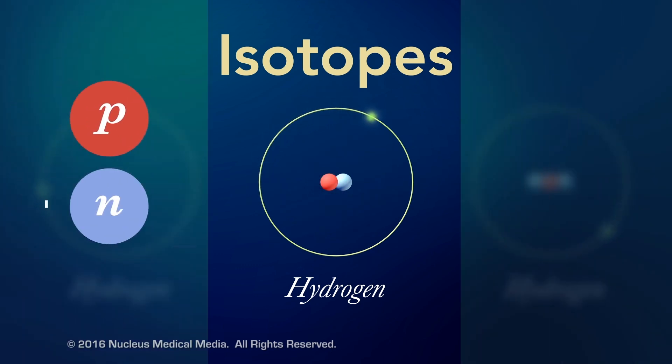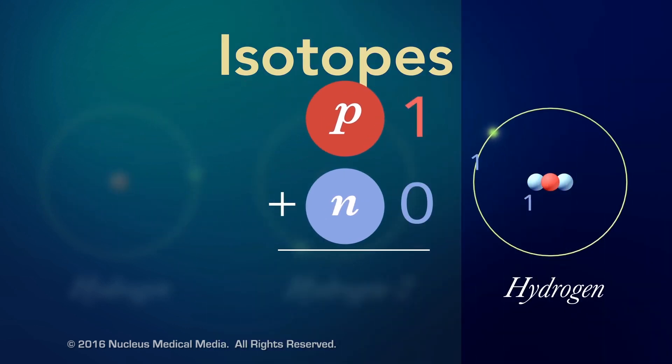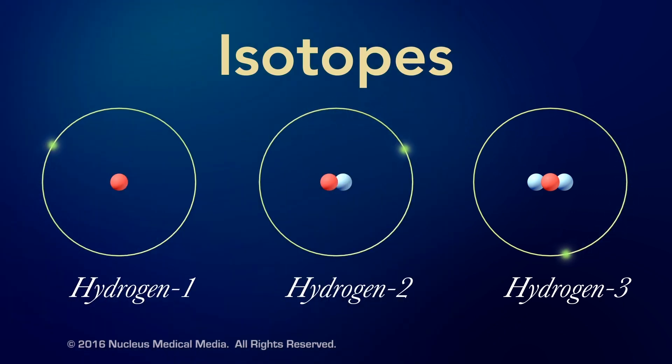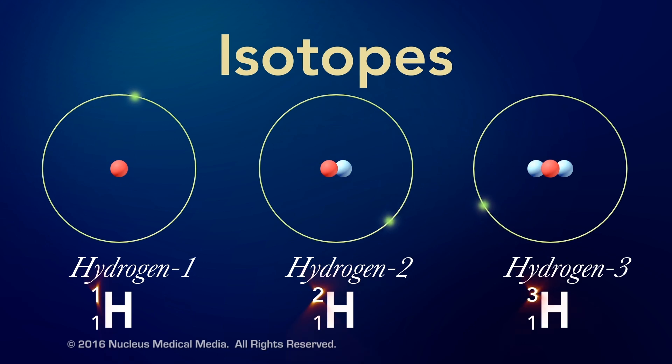Since neutrons have about the same mass as protons, isotopes of the same element have different mass numbers. In fact, an element's isotopes are often identified by their mass numbers.